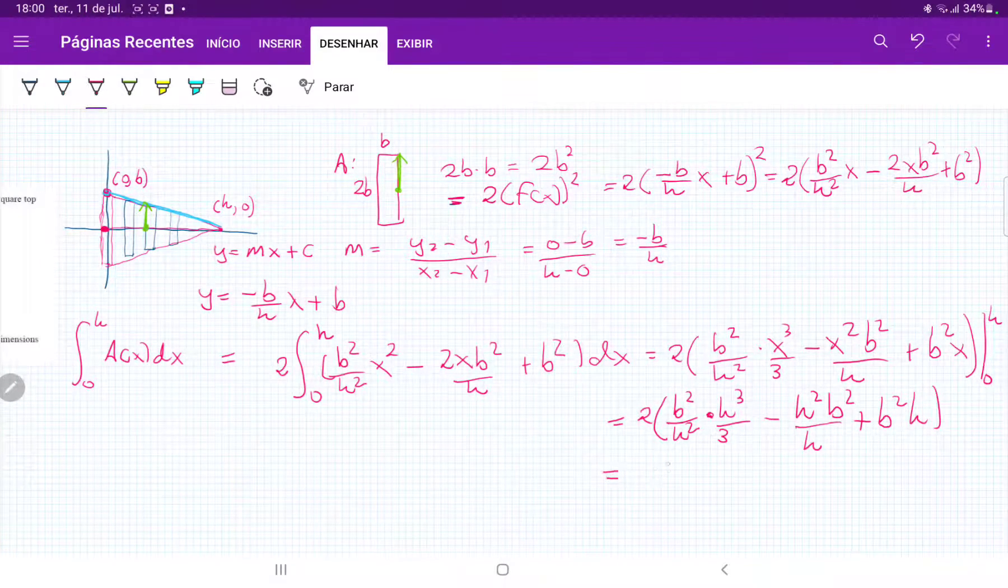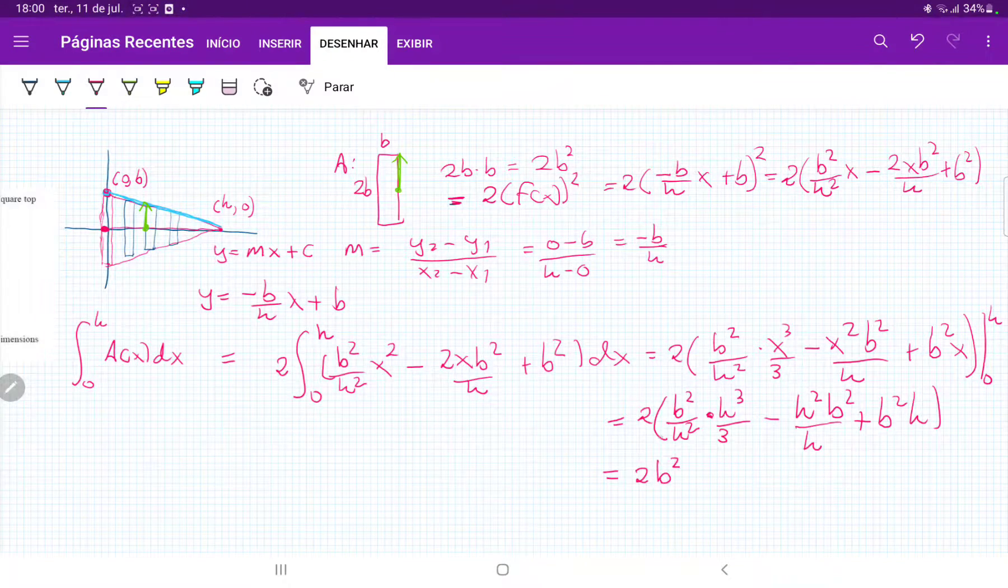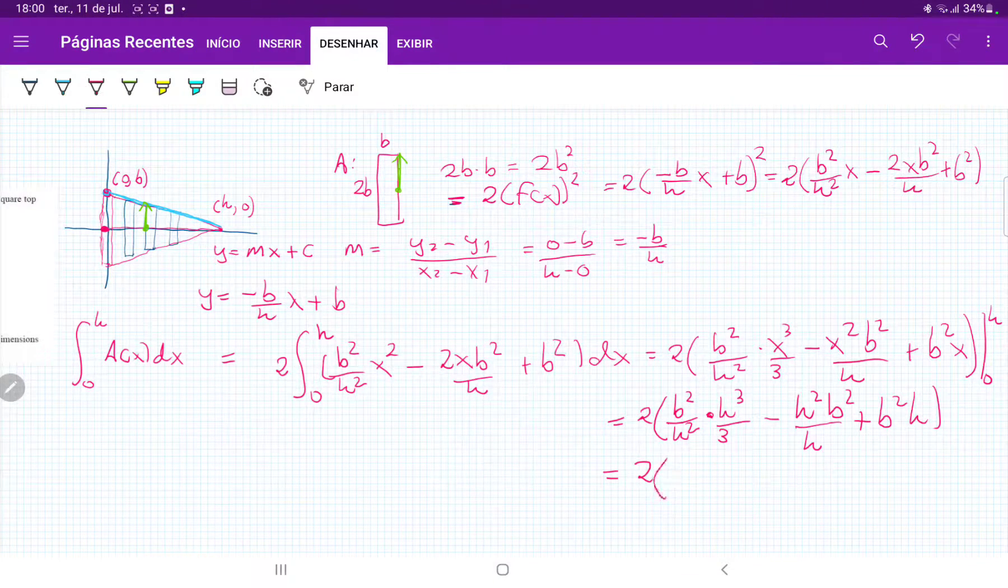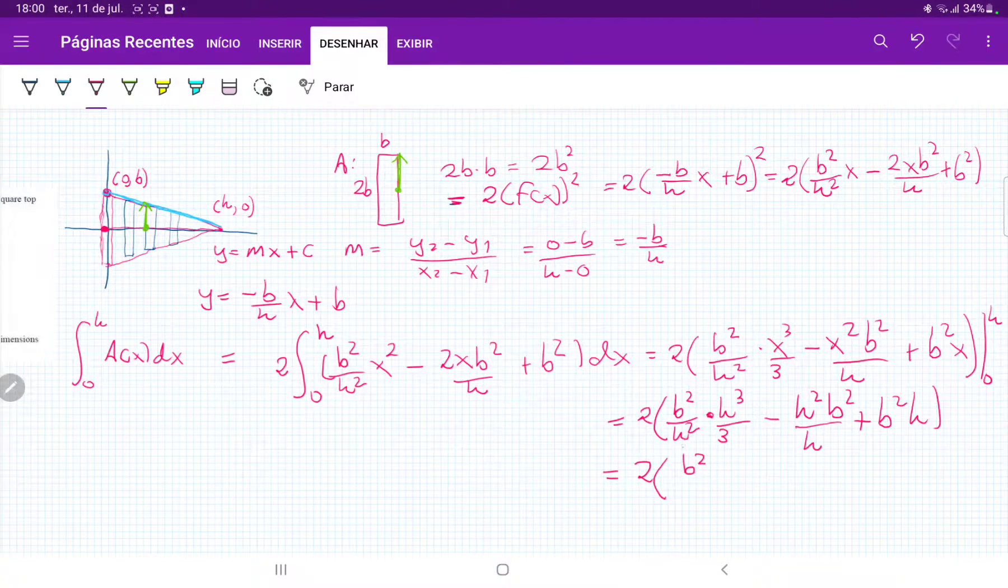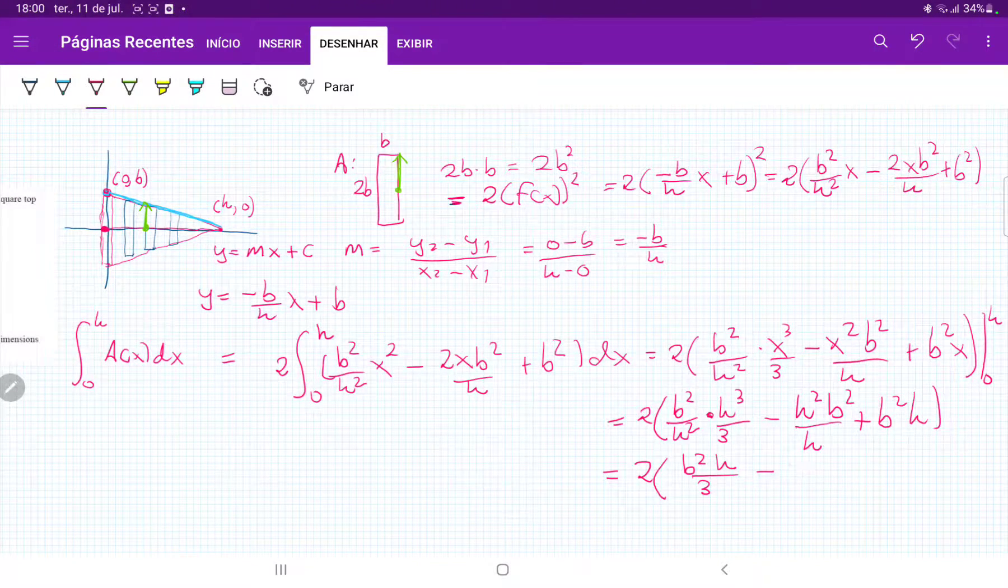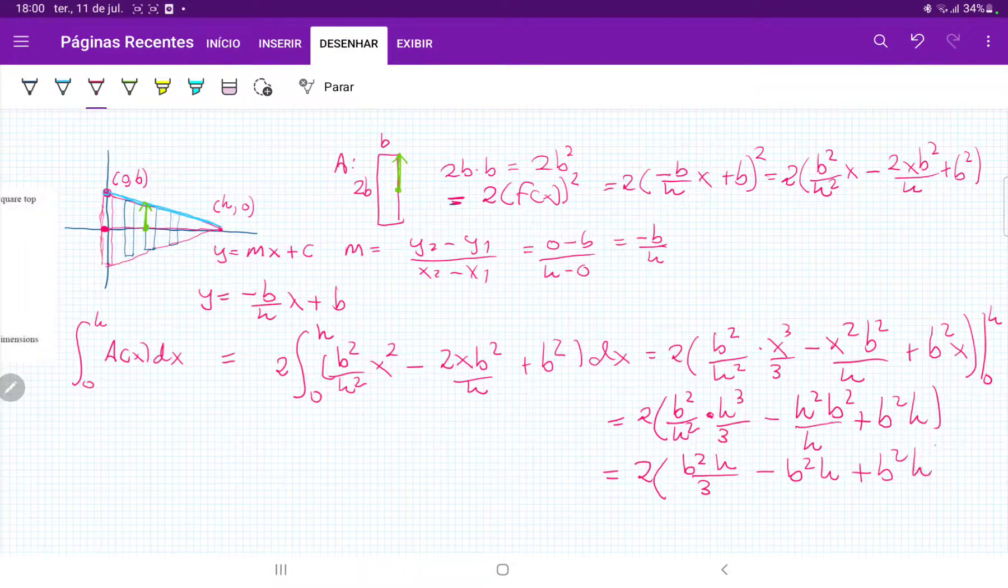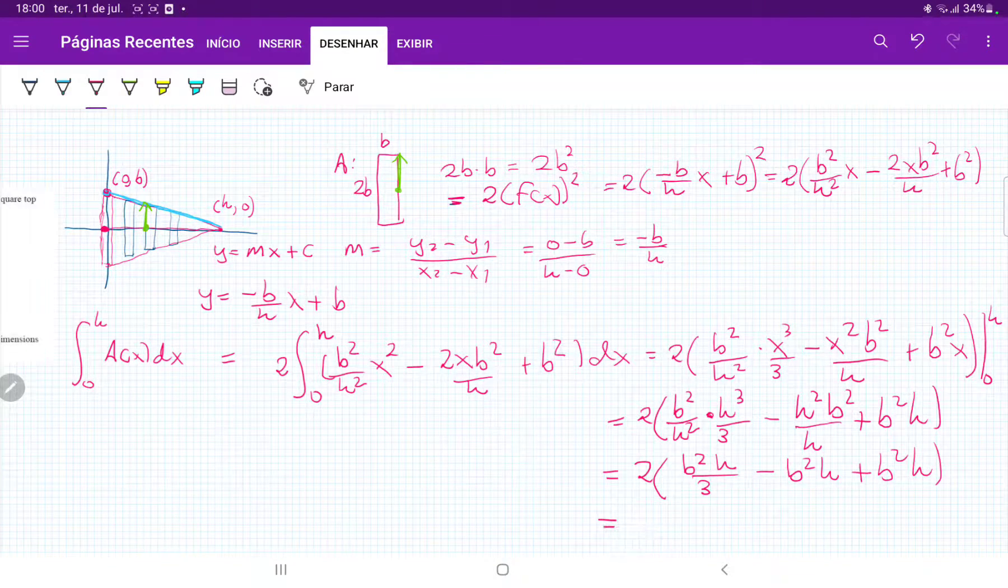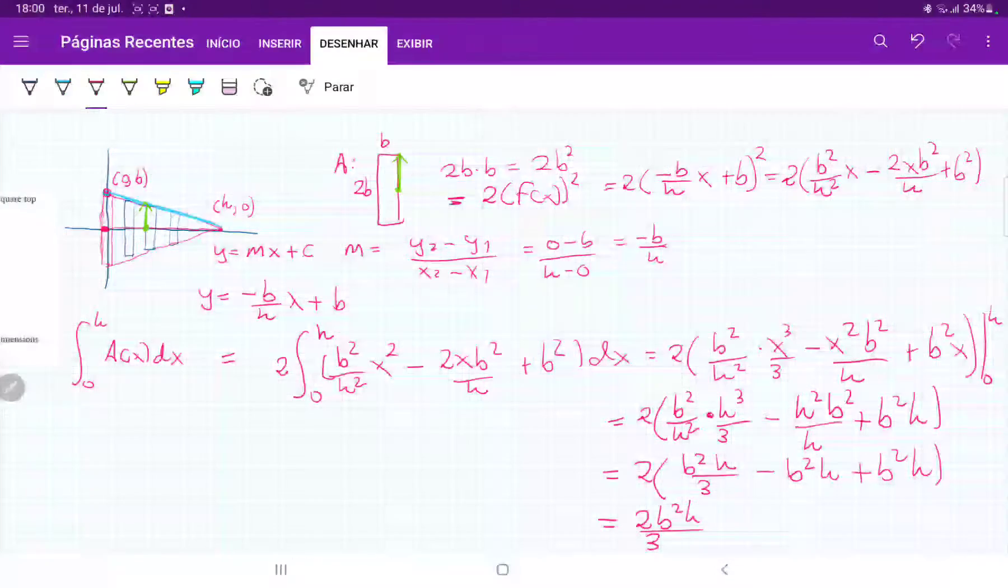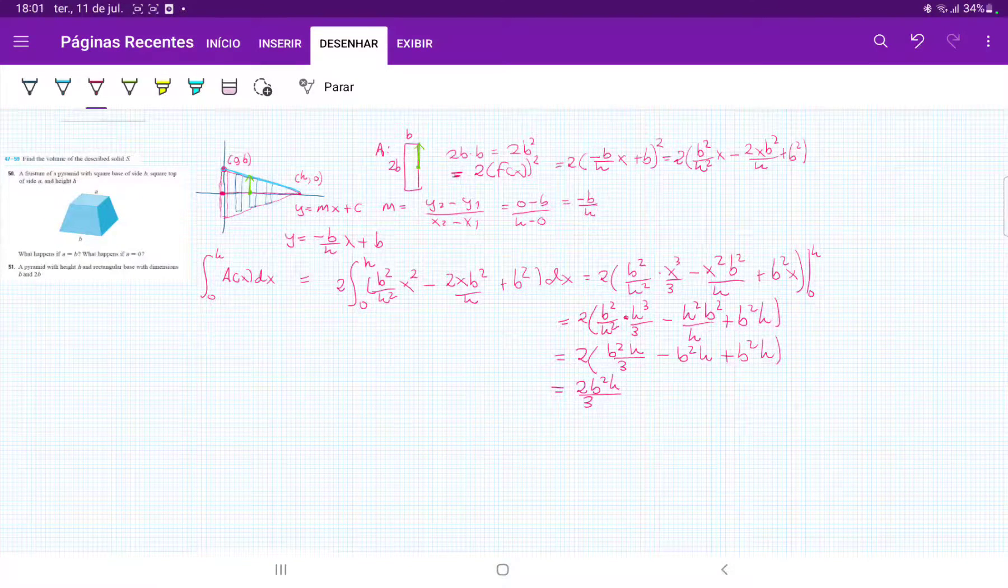which is equal to 2 times, and then let's see, that is b squared, these h's they cancel out, so that's just h over 3, minus that's just b squared h because these cancel out as well, and then plus b squared h. So these two are going to cancel out, and then my answer is just going to be 2b squared h over 3. That's my volume of this pyramid with a rectangular base.